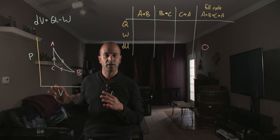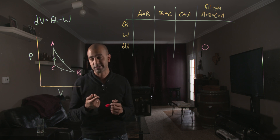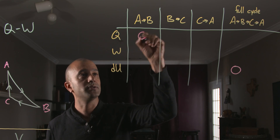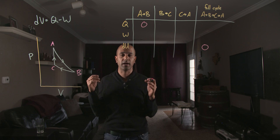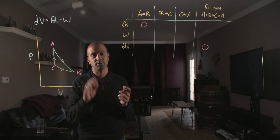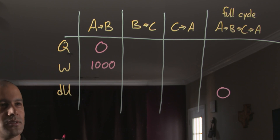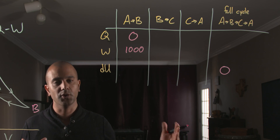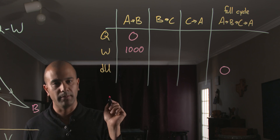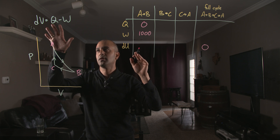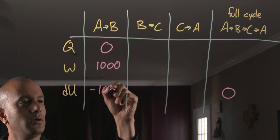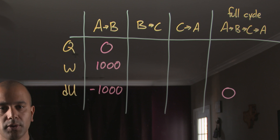Let's fill in the chart using the values given in the problem and what we know about the particular processes. The first process, A to B, is an adiabatic expansion. Adiabatic means no heat is transferred in or out of the gas, so I can put a zero there. The problem also tells us the gas does 1,000 joules of work on its surroundings between A and B, so I put positive 1,000 — this W stands for work the gas does on its surroundings, not work done on the gas. Applying the first law, heat minus work equals internal energy change for that column.